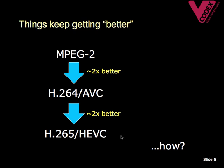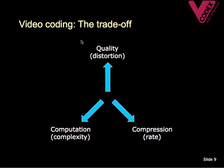That means that an HEVC compressed video file could be half the size of an H.264 video file with the same original video and roughly the same image quality. Part of the answer to how this happens is that there's a fundamental trade-off in video coding. When we compress video we can trade between picture quality, compression ratio and computation. It's possible to get better compression, better picture quality, or both, if we can throw more computing power at the problem. Processors are getting faster all the time, so it makes sense to use more computing power to improve video compression.